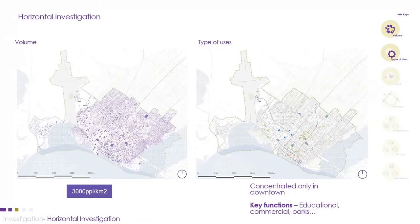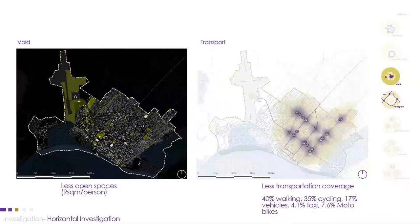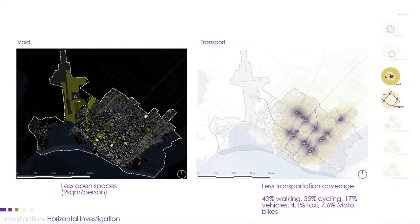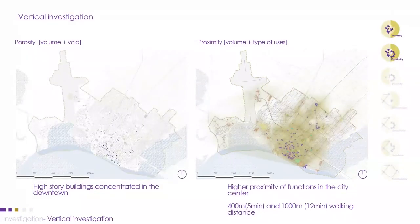We started with horizontal investigation, studying the density of the city from the volume map. The type-of-uses map helped us understand the concentration and distribution of key functions such as educational, commercial, and parks. We identified open spaces using the void map, and identified the transportation coverage using the transportation map, which also shows the modal split — more than 50% of people are cycling or walking.